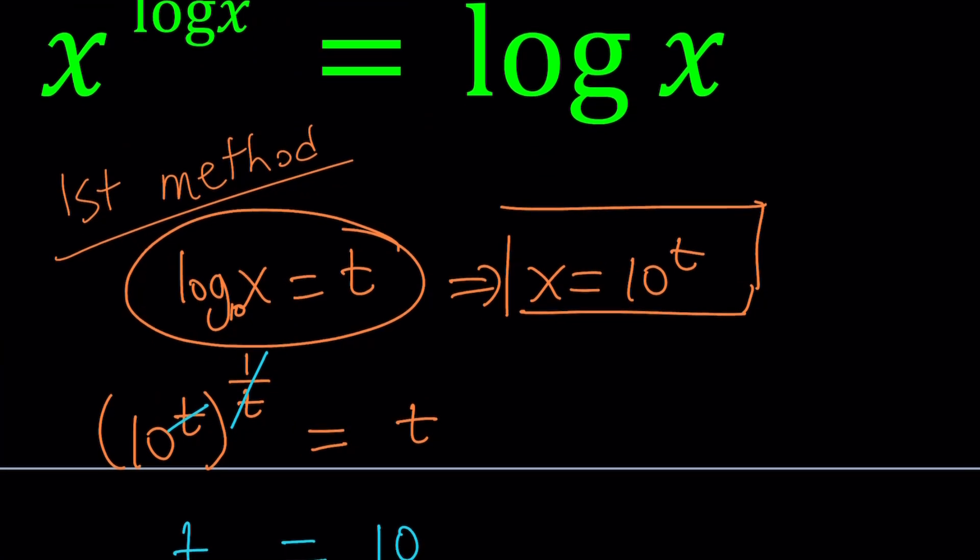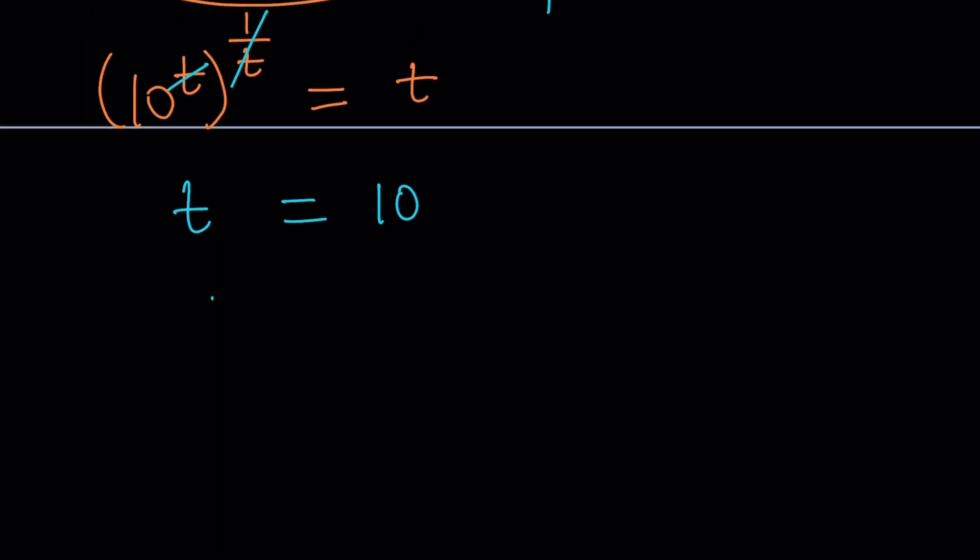So, now, t equals 10, but what is t and what is x? x is equal to 10 to the power t. So, since x is 10 to the power t and t equals 10, then x is going to be 10 to the power 10. So, in other words, it's 1 followed by 10 zeros, which you can basically write as 1, 2, 3, 4, 5, 6, 7, 8, 9, 10.